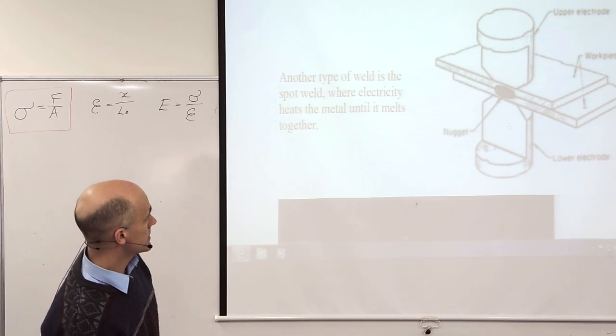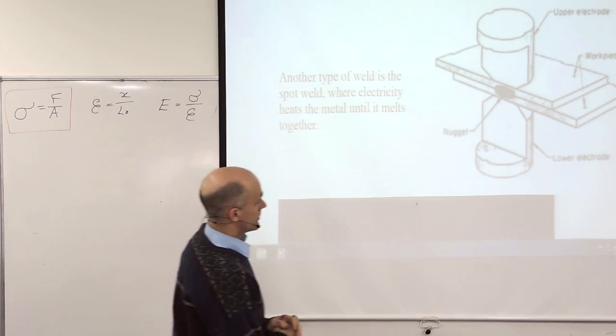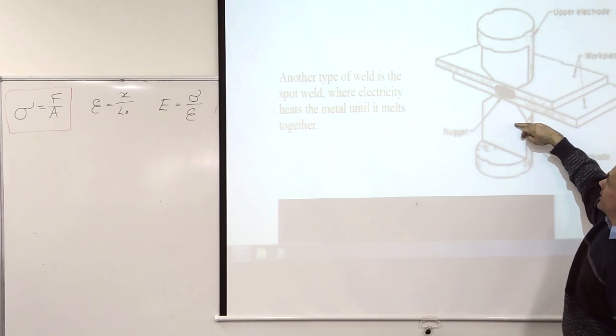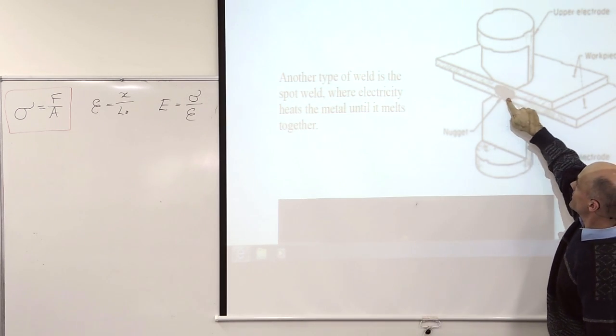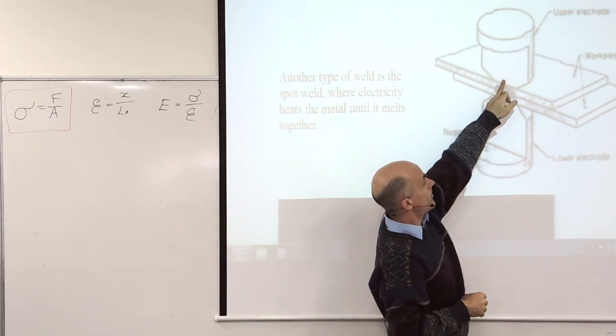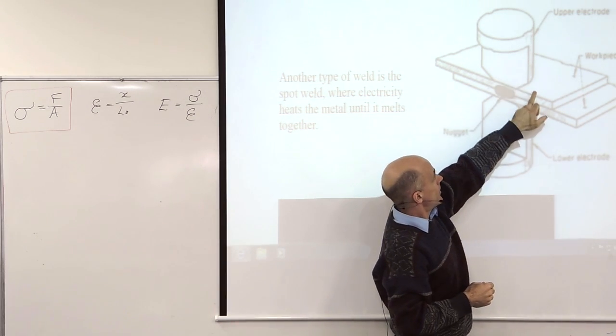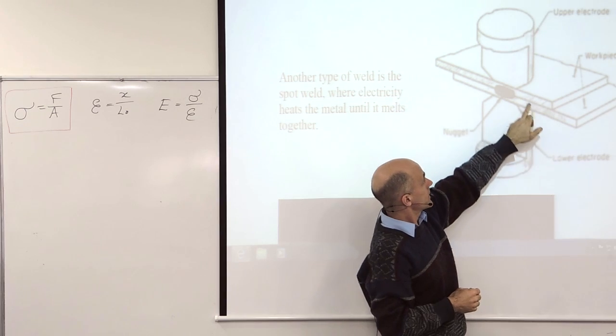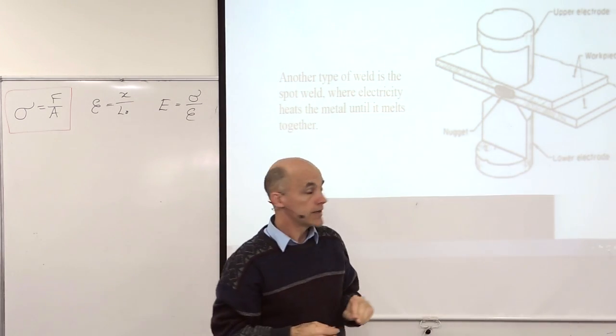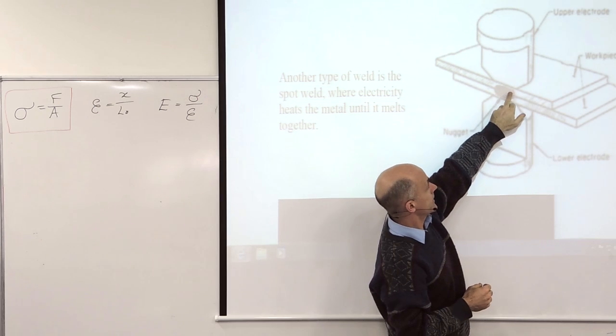Another type of welding is resistance welding. Where you're using electric current to run from one electrode through to the other electrode. And then the connection between the two plates happens to be the highest resistance. Because this would typically be made of copper. And the connection between copper and steel is pretty good. But the connection between steel and steel is the worst one. So that's where the most resistance is. And hopefully that's where you get the heat from.